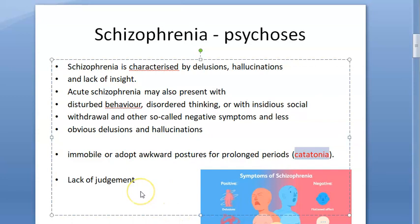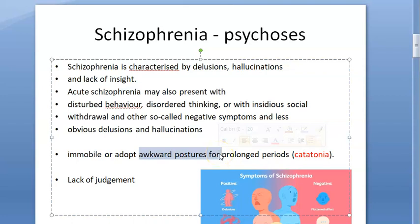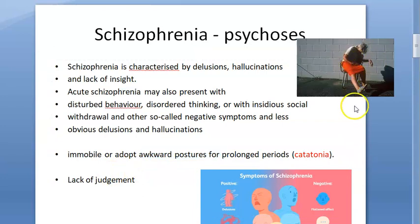One more symptom in schizophrenia is catatonia. These people can have awkward postures that they maintain for prolonged periods - that is catatonia. An awkward posture held for a prolonged period is catatonia, and it is one of the symptoms seen in schizophrenia.